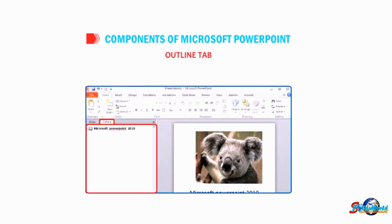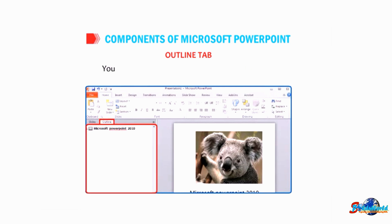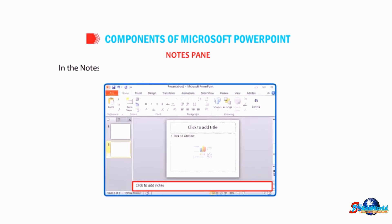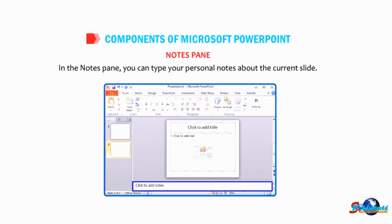Outline tab: the Outline tab displays the text content of each slide. You can edit your text directly in the Outline view. Notes pane: in the Notes pane, you can type your personal notes about the current slide.